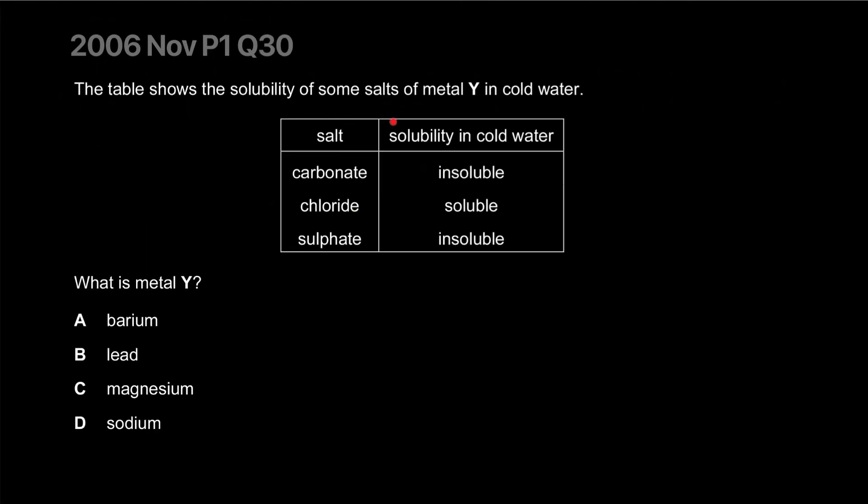The table shows the solubility of some salts of metal Y in cold water. Insoluble, soluble, insoluble. What is metal Y? So all carbonates are insoluble except group 1 - sodium, potassium, and I think there was one more. Sodium is out. Chlorides - all chlorides are soluble except silver. Sulfate is insoluble, so barium is actually insoluble. Lead and magnesium sulfate are soluble. The correct answer is A.